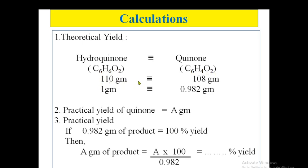Its molecular formulas are C6H6O2 for hydroquinone and C6H4O2 for quinone. From that you can easily find out molecular weights, 110 grams and 108 grams. So one gram of hydroquinone gives you 0.982 grams of quinone.